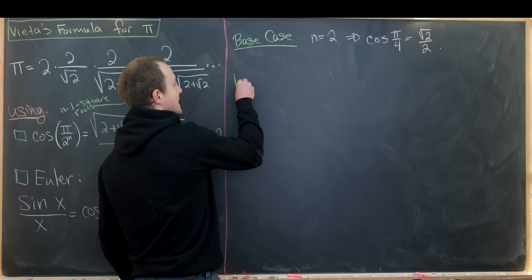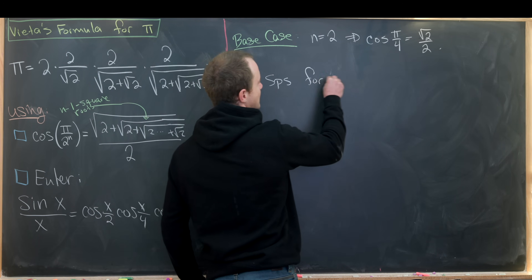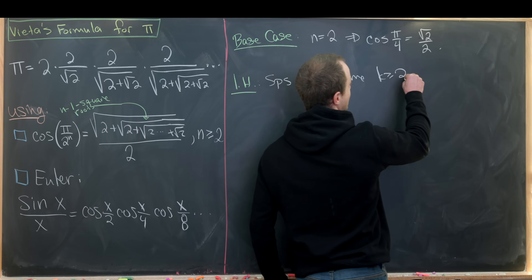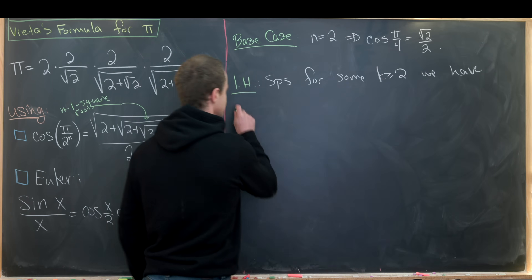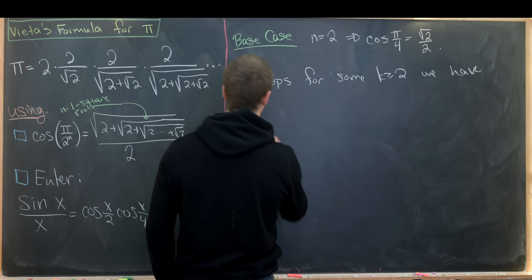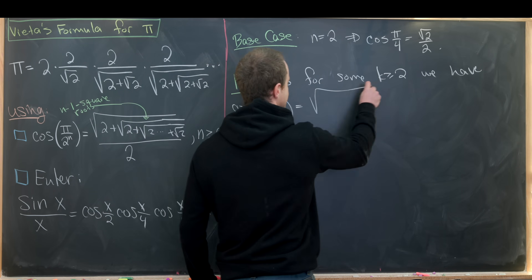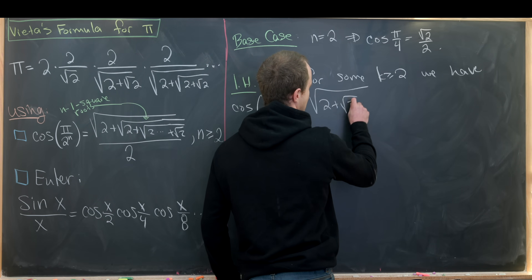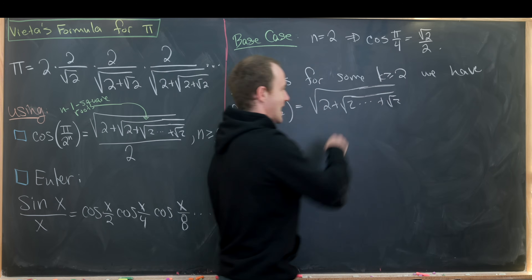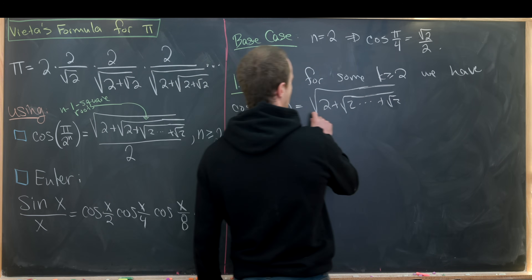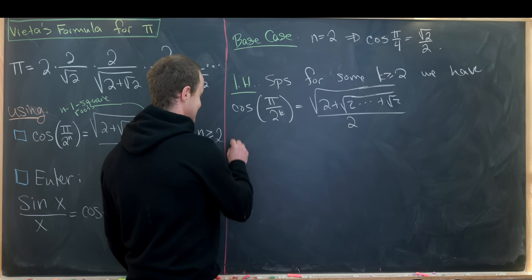Now we'll make an induction hypothesis. We suppose that for some k greater than or equal to 2, the cosine of π over 2^k equals the square root of 2 plus the square root of 2, and so forth, plus the square root of 2 — where we have k minus 1 total inclusions of the square root of 2 — all over 2.